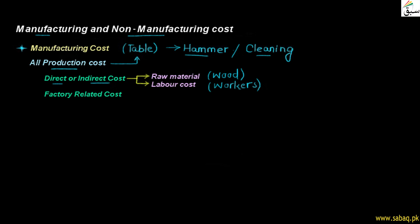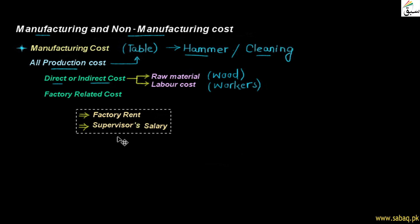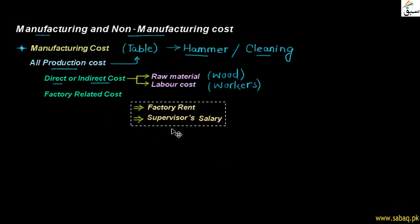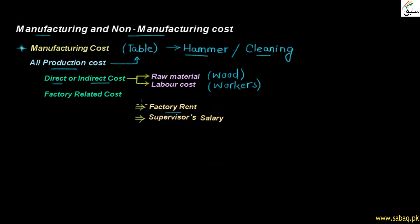Besides these, there are costs in our factory. We call these direct and indirect costs — the cost of material, labour, and factory overhead. For example, the factory rent we must pay, and the supervisor's salary who oversees all tasks and ensures production is running properly — these are all part of manufacturing cost.